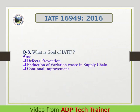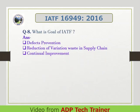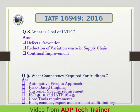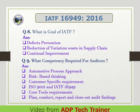Question 8: What is the goal of IATF? Answer: Defect prevention, reduction of variation and waste in the supply chain, and continual improvement. Question 9: What competency is required for auditors? Answer: Automotive process approach.